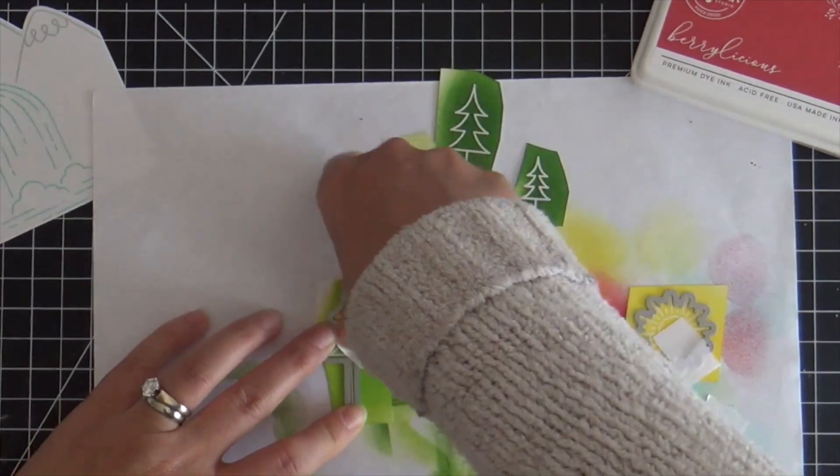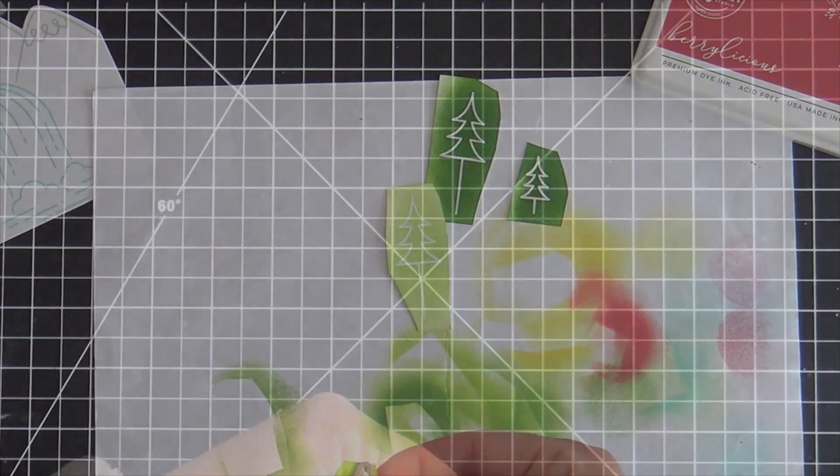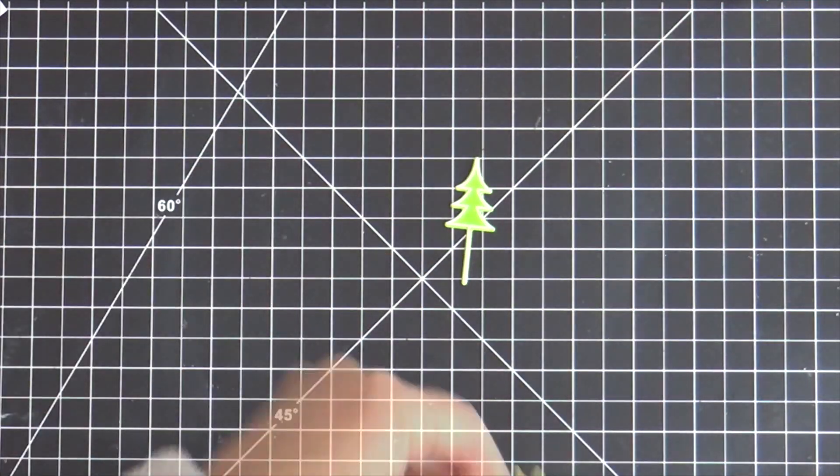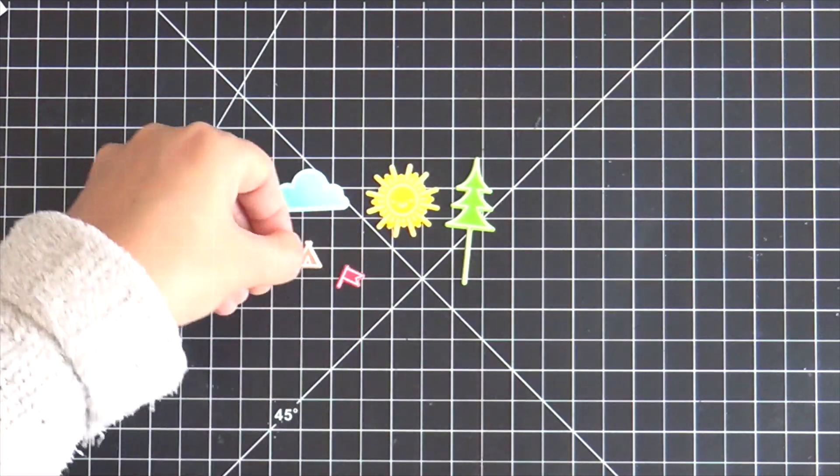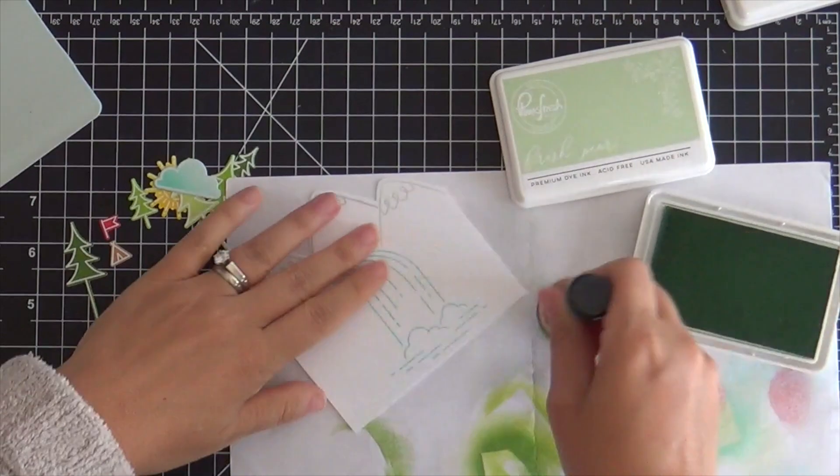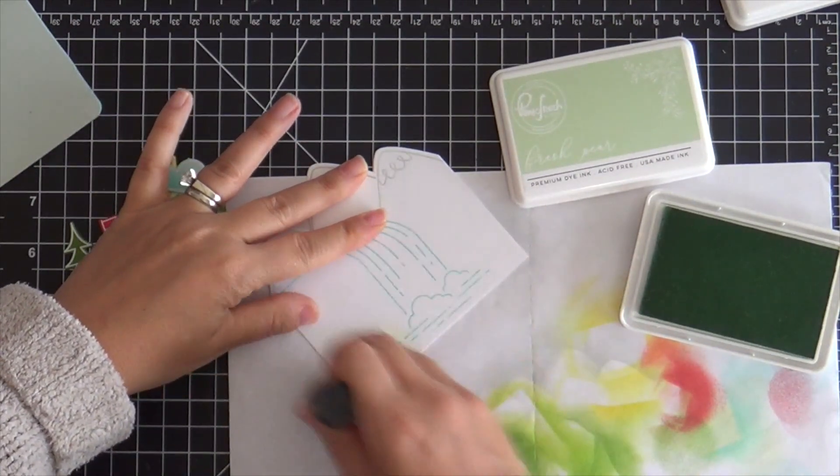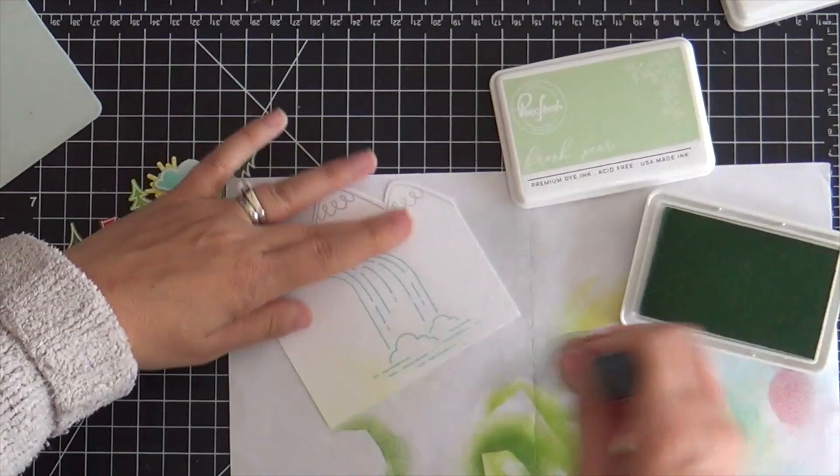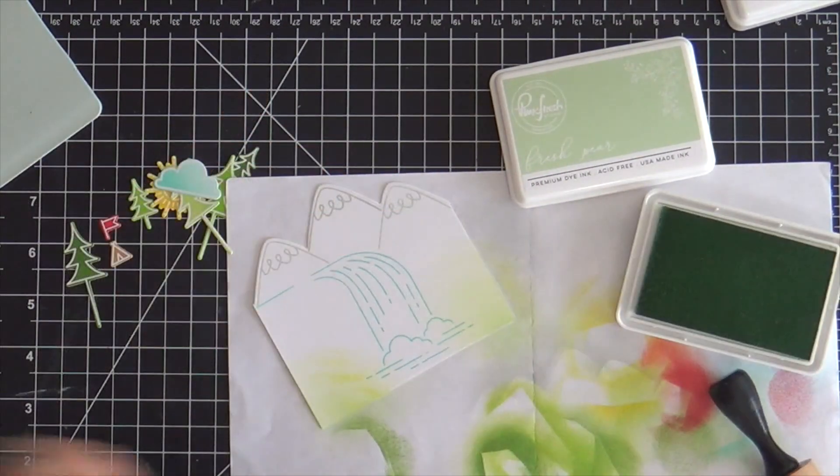Now I'm taking the coordinating dies and I'm going to die cut every one of these little images out. Lately, I've been taking all my die cutting off camera, unless it's a die cutting technique that needs to be shown. If it's just coordinating dies, I take it off camera. I feel like it keeps the video moving. I'd like to know your opinion. Is that something you want to see? Or is it like, get on with the show?